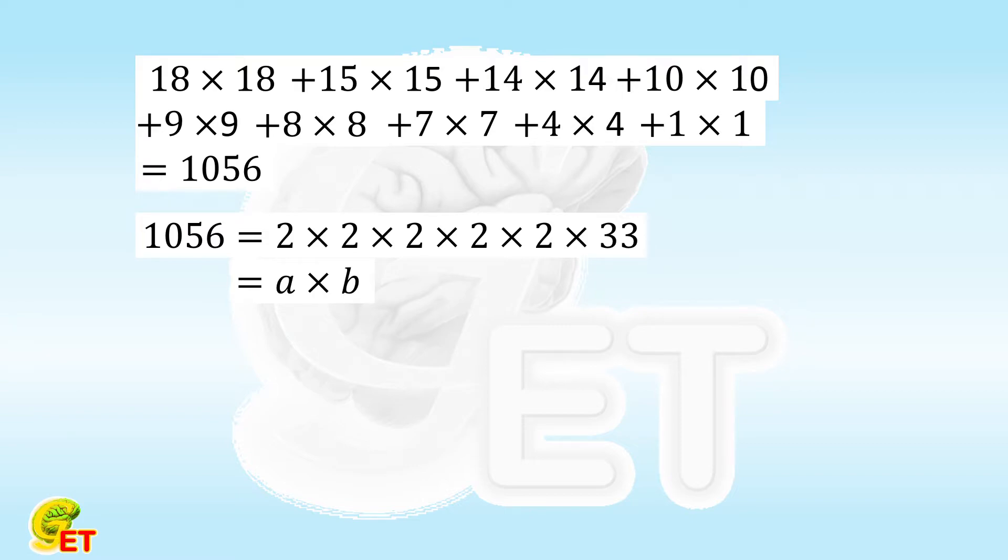Both A and B should be at least as big as the biggest puzzle's side length, which is 18. 33 is bigger than 18 already. We need all the 5 twos to construct the other one, since otherwise, its maximal value could only be 16. Therefore, the height and width of the rectangle are 32 and 33, respectively.